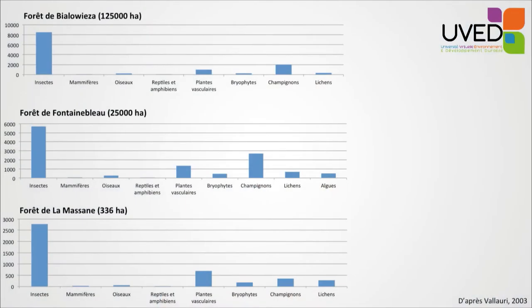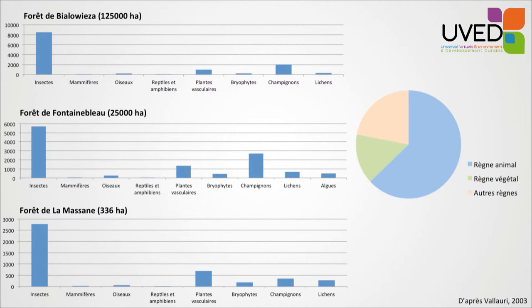By looking at this graph, we understand that the forest is a world peopled by insects, vascular plants, and mushrooms — these three main groups are predominant, as is mostly the case in temperate forests across Europe. Across three graphs corresponding to forests of different types and sizes, insects, vascular plants, and mushrooms dominate. Two thirds of the species are represented by the animal world, and the other third is divided between the vegetal world and other groups. In terms of species, 60% of forest diversity is made up of insects.